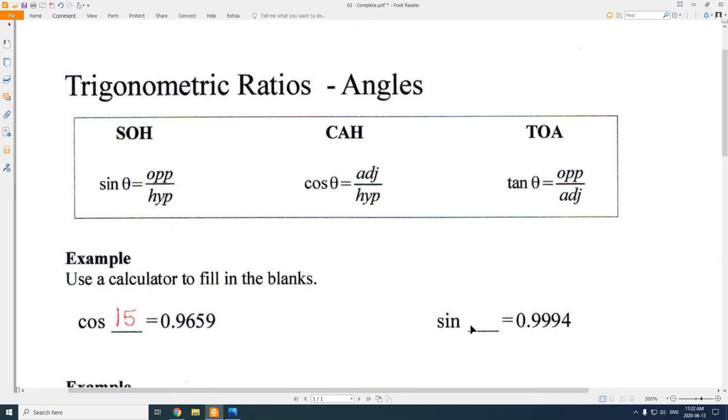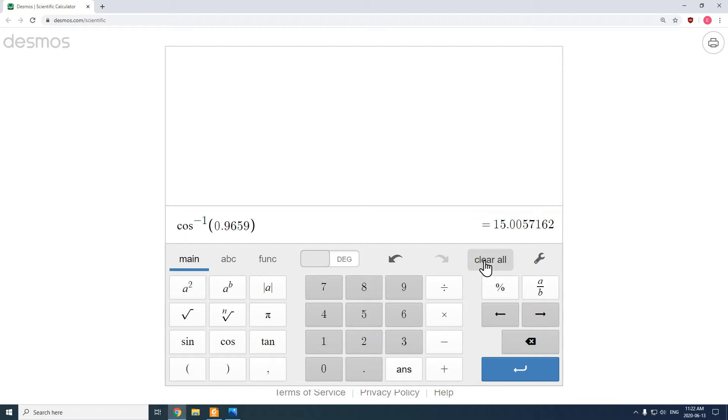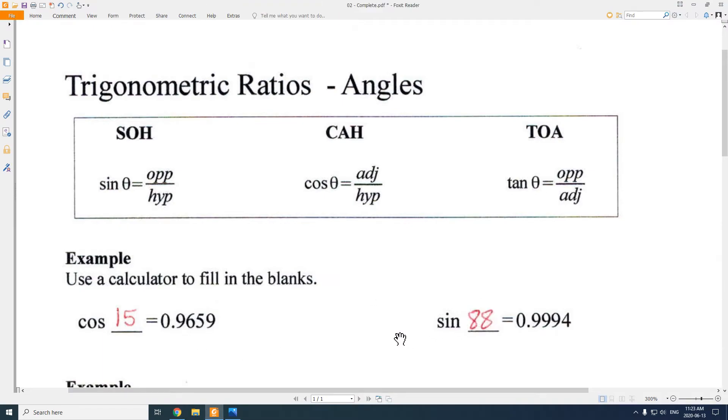We can do the same thing here. Next one, sine. Sine of what angle gives you a ratio of 0.9994? We'll use our calculator this time. So I'll go into my calculator. I had sine, so I need my second sine to get my inverse sine. Because in this case, I want to find the angle. Any time you're trying to get the angle is when you'll use that inverse. So inverse sine of 0.9994, that ratio shows up when the angle is 88 degrees.